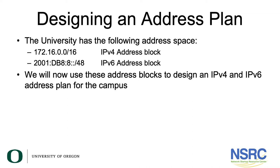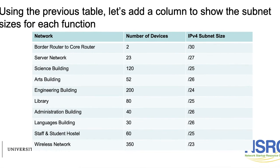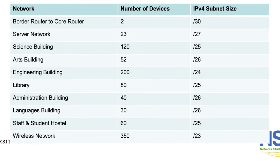We will now use SysAddrex blocks to design an IPv4 and IPv6 address plan for the campus. Using the previous table, we'll add a column to show the subnet sizes for each function. For the border to core router, the number of devices is 2, which means the subnet size needed is a /30.